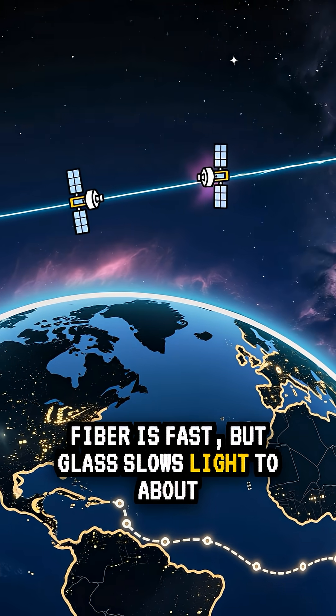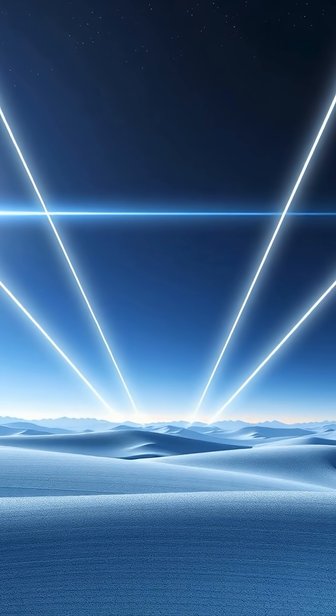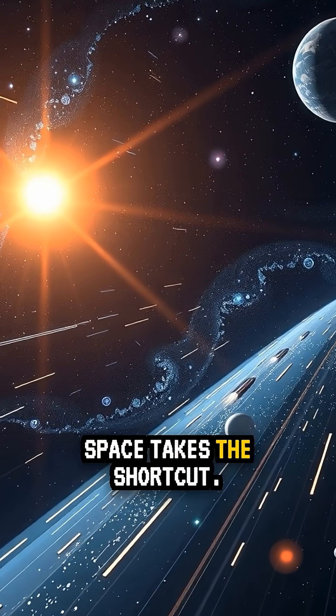Fiber is fast, but glass slows light to about two-thirds its speed. In vacuum, it goes full speed. Space takes the shortcut.